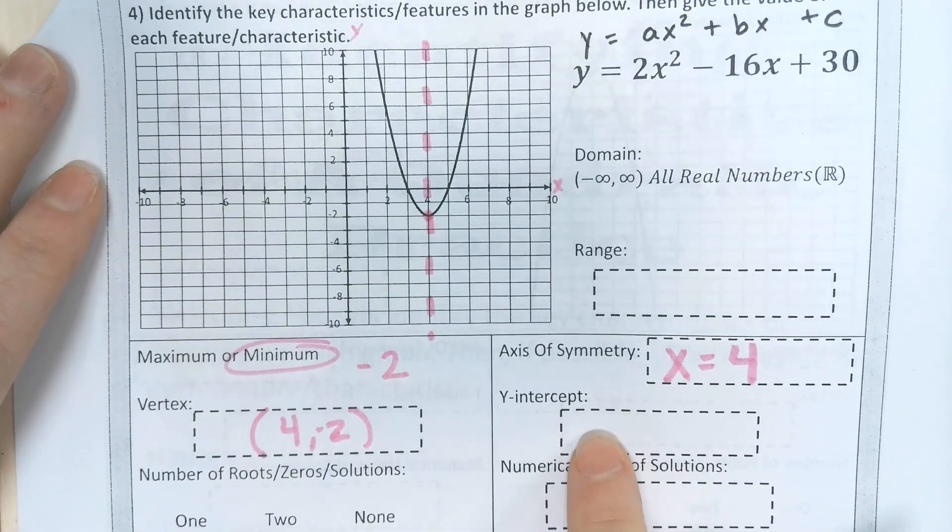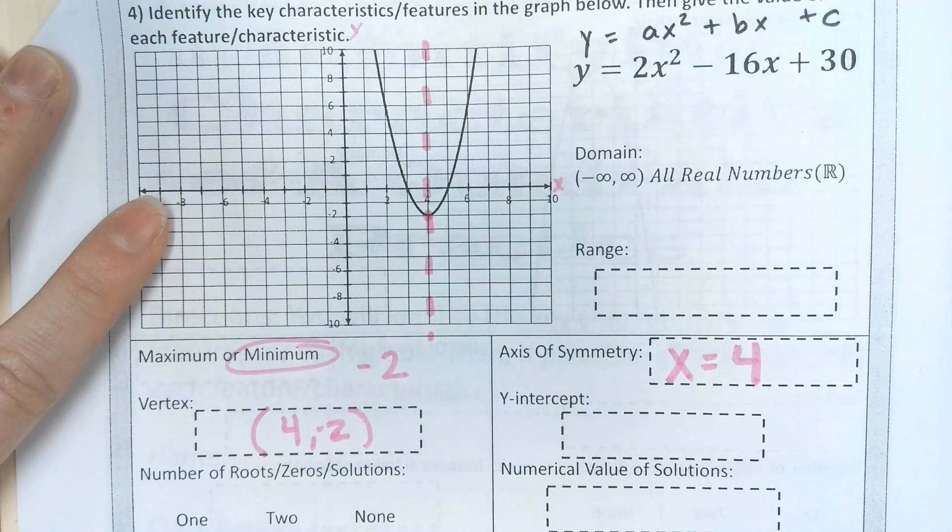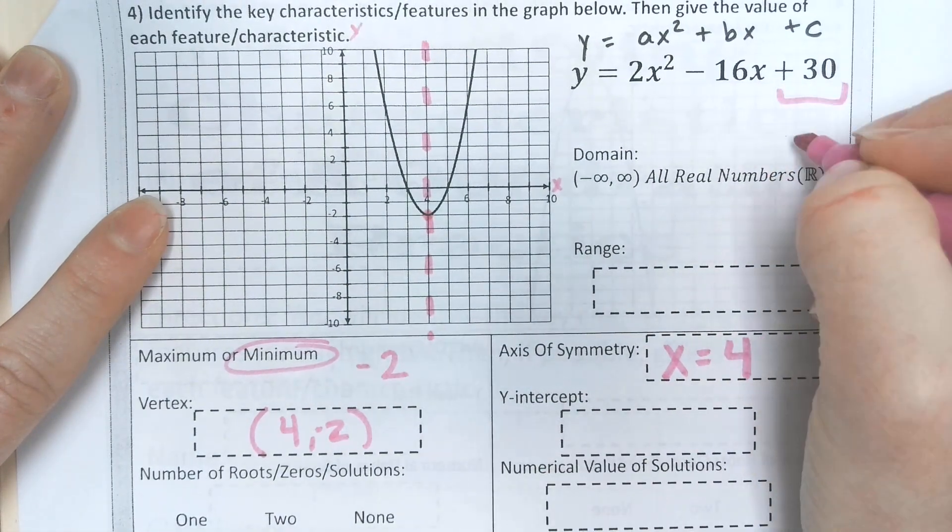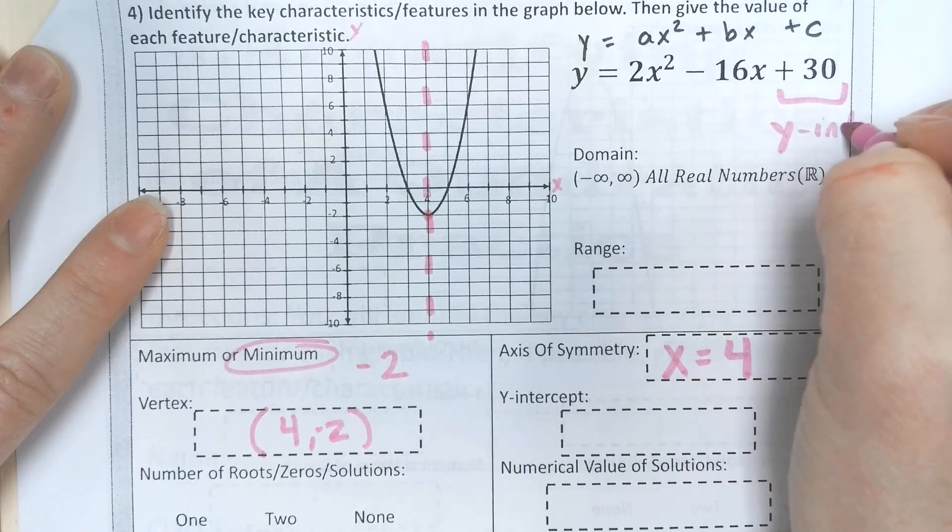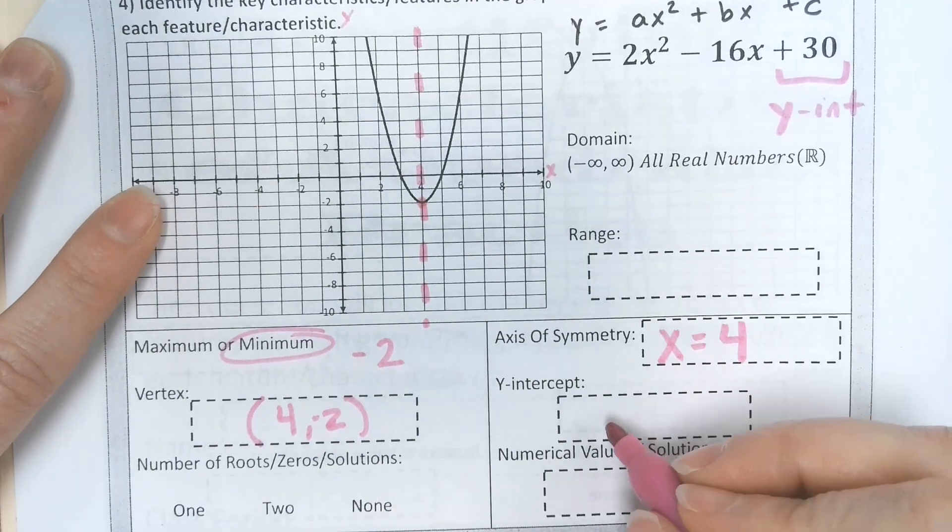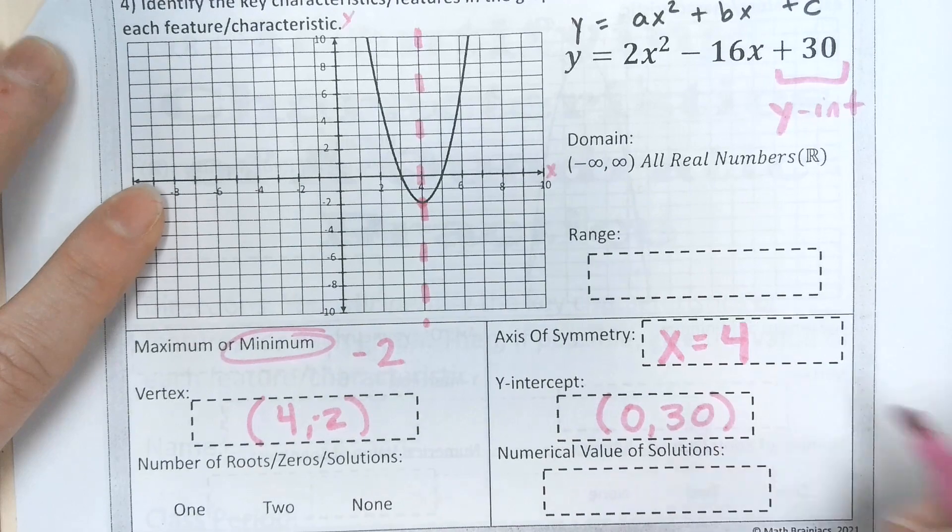Your y intercept is where it crosses the y axis. We can't see it here, but it is our c value. This is your y intercept, it is the c. So we could write this as 0 for x, 30 for y.